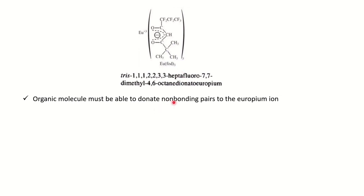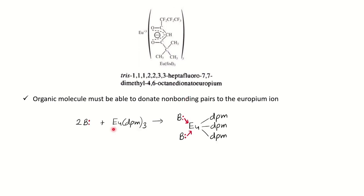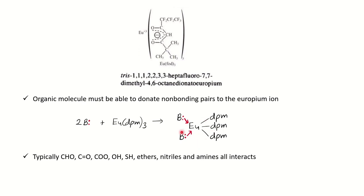What is the condition for the lanthanide reagent to form a complex with your molecule? Not all molecules form a complex with the lanthanide. The organic molecule must be able to donate non-bonding electrons to the europium ion. Arenes and dienes do not form a complex with the lanthanide reagent because they don't have non-bonding electrons. Molecules with non-bonding electrons — aldehydes, ketones, esters, alcohols, thiols, ethers, and amines — all interact with the europium reagent because they have lone pairs of electrons to donate.